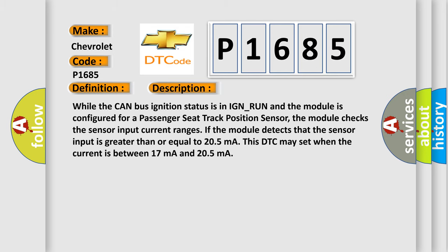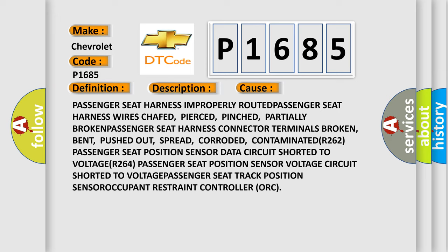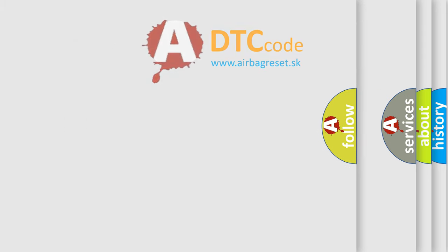This diagnostic error occurs most often in these cases: passenger seat harness improperly routed; passenger seat harness wires chafed, pierced, pinched, or partially broken; passenger seat harness connector terminals broken, bent, pushed out, spread, or corroded; contaminated or shorted passenger seat position sensor data circuit or voltage circuit shorted to voltage; passenger seat track position sensor fault; or an issue with the occupant restraint controller (ORC).